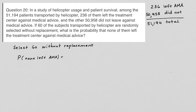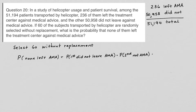To calculate this, what this means is that we want the probability the first one did not leave AMA, times the probability that the second one did not leave AMA, and then we keep going all the way down the line until we get to the 60th did not leave AMA.